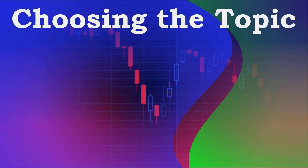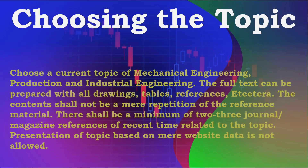Choosing the topic: the seminar shall be an in-depth study of a topic which does not form a part of the regular curriculum. Choose a current topic of mechanical engineering, production and industrial engineering. The full text can be prepared with all drawings, tables, references, etc. The contents shall not be a mere repetition of the reference material. There shall be a minimum of 2-3 journal and magazine references of recent time related to the topic.